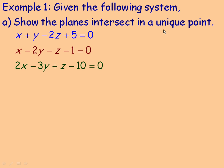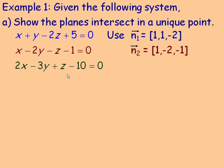Remember, the word unique means one, a single, only one. So here are the three planes, and here are the three normal vectors: (1, 1, -2), (1, -2, -1), and (2, -3, 1).